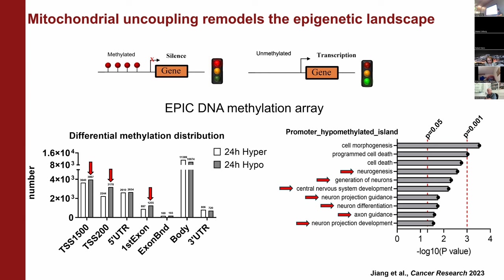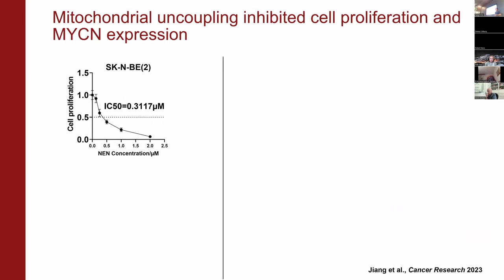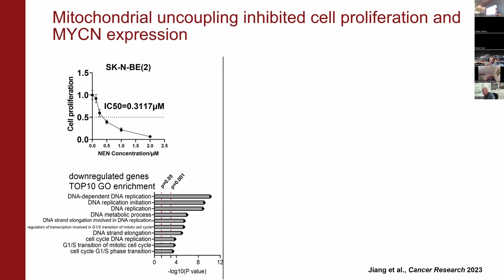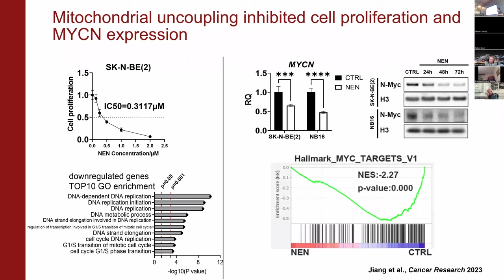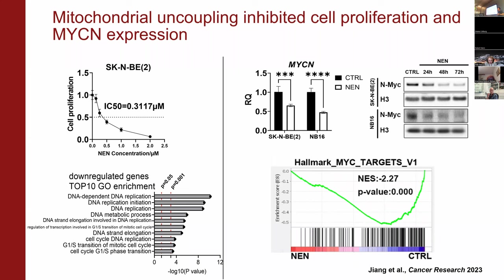On the other hand, we also observe that the mitochondrial uncoupler induced cell cycle arrest, which is associated with neuron differentiation. Consistent with cell cycle arrest, we see that NEN directly downregulates genes associated with cell cycle progression and DNA replication. More importantly, we find that NEN treatment reduces the MYCN protein and mRNA level. MYCN is a primary amplified oncogene in neuroblastoma, strongly associated with unfavorable prognosis. Consistent with MYCN reduction, NEN treatment reduces the gene expression of MYCN target genes.